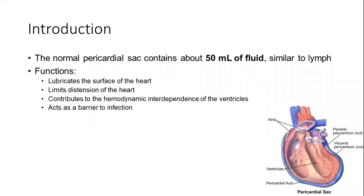Normally there is about 50 ml of fluid in the pericardial sac, and the constituent of that fluid is similar to that of lymph. The fluid and the pericardium itself lubricate the surface of the heart, limit distension of the heart, contribute to hemodynamic interdependence of the ventricles, and act as a barrier to infection, decreasing the chances of spread of infection to local structures.